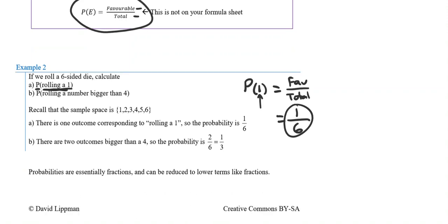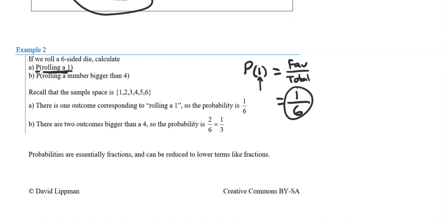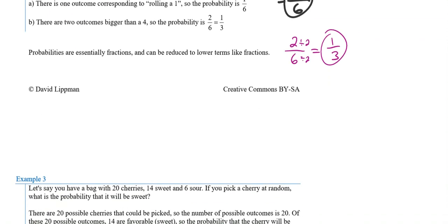For part B — probability of rolling a number bigger than four. Bigger than four doesn't include four, so the only possibilities are five and six. The probability is favorable over total: there are two ways it could happen — rolling a five or a six — out of six total outcomes. That's two over six, which simplifies to one over three.